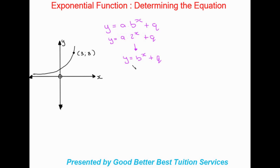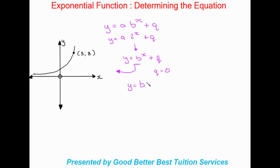Applying this equation to the graph on the left: the first thing we can notice is that there is no asymptote given to us. That is because the x-axis is acting as our asymptote. The asymptote is represented by a y value, and y equals zero on the x-axis. So we know our asymptote is zero, meaning q equals zero.